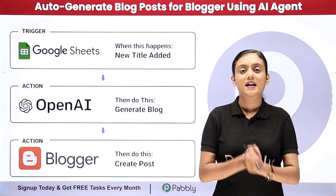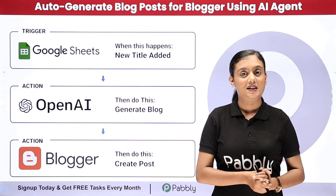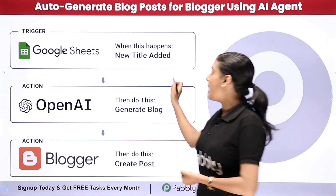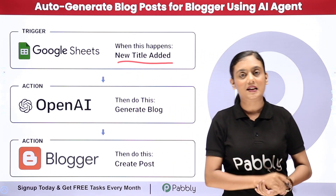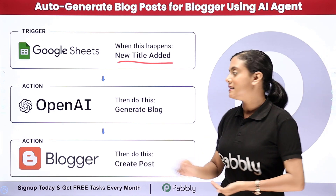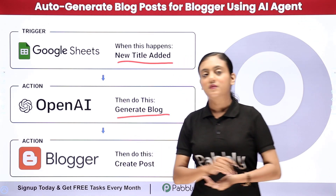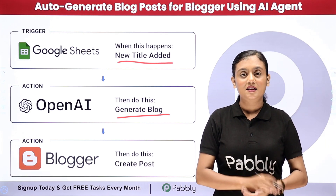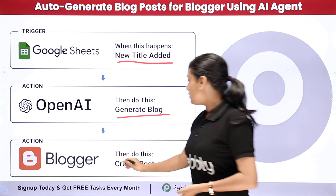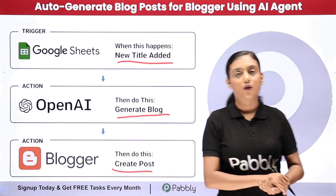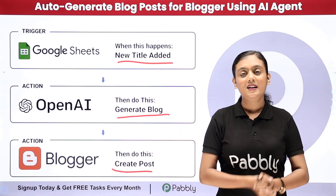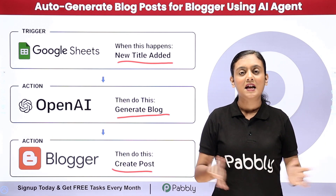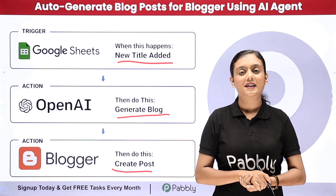I keep the ideas for my blog in Google Sheets. As soon as I add a new title and other details — the idea for the blog — in Google Sheets, an AI agent automatically generates the blog content using all those details, then creates a post in my Google Blogger account. If you want to learn how to create this AI agent for your business, let me take you to my screen.